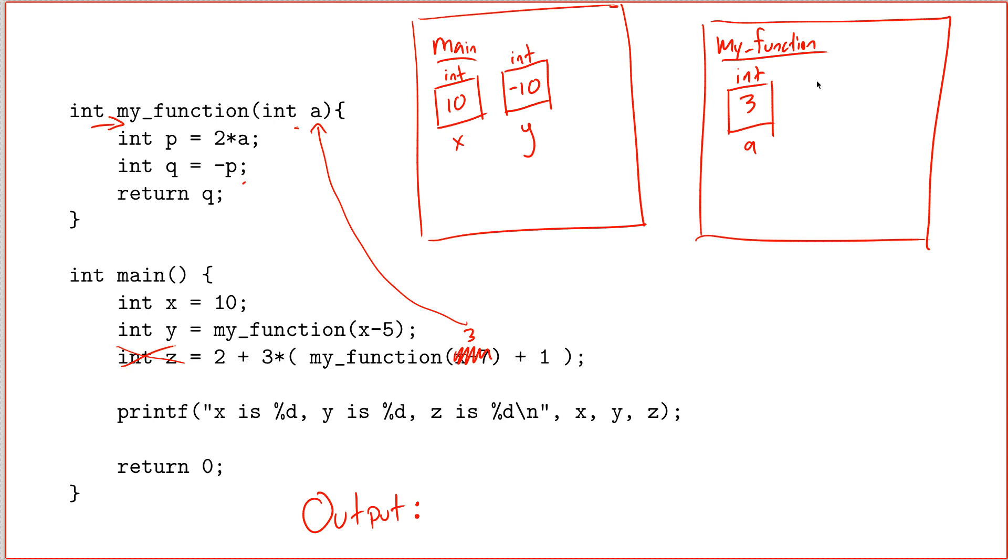So int p. I create a variable called p. Equals two times a. So two times a would be six. It's an int. And then next line is int q equals negative p. So q would be negative p, int q, negative six. And then I return the value of q. So I go back to the function call. That was this. And I replace the whole thing with the value of q, which is negative six.